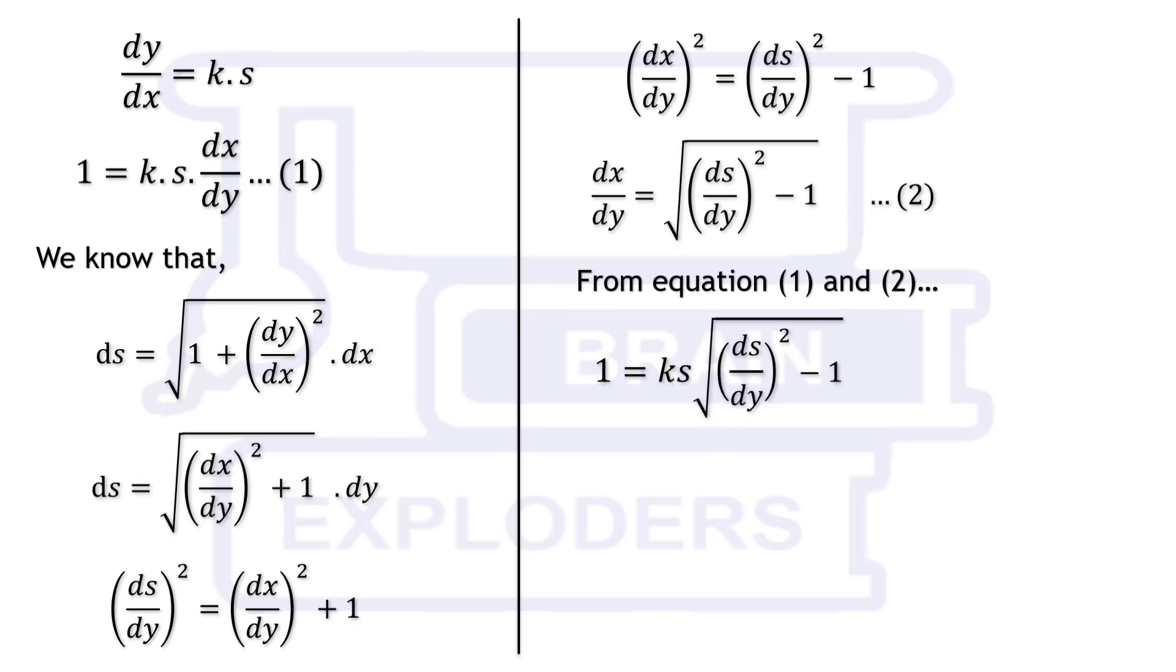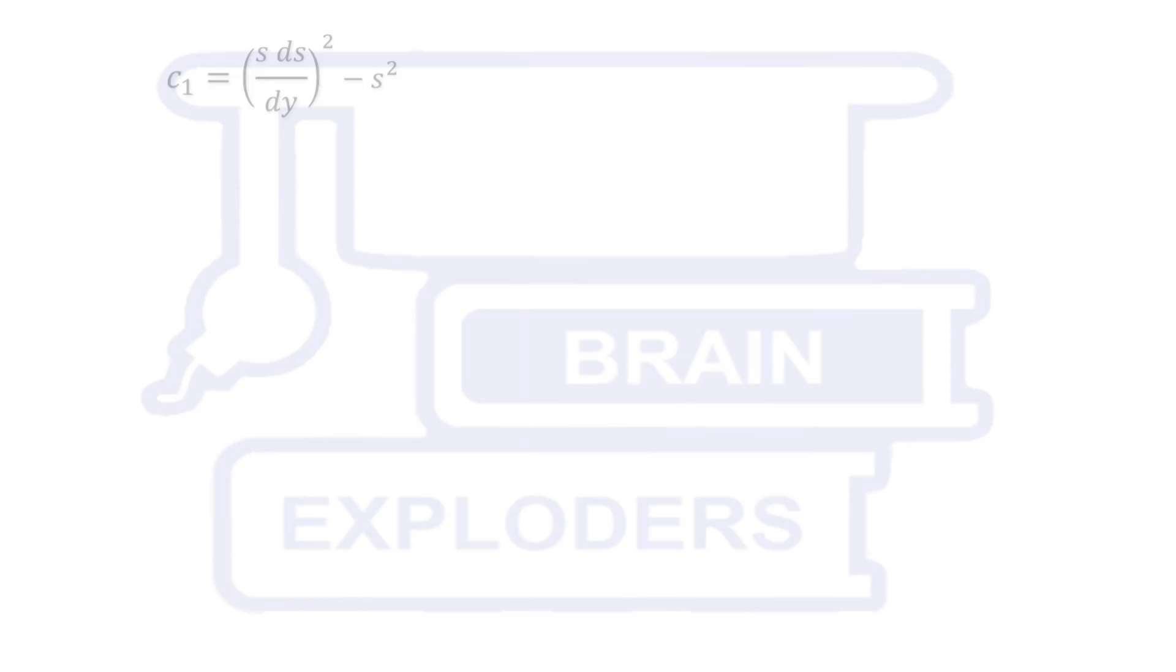Now from equation 1 and 2 we get 1 over k square equals to s square times ds by dy square minus s square. We can substitute 1 over k square by another constant c₁ just as a simple notation. Some further calculations take us to dy equals to s ds over root c₁ plus s square.